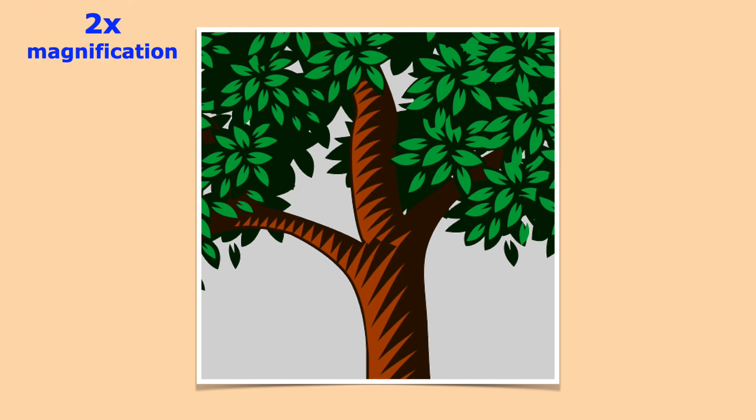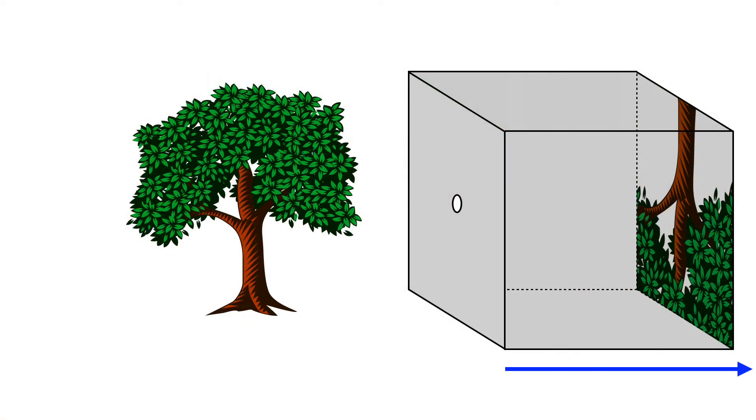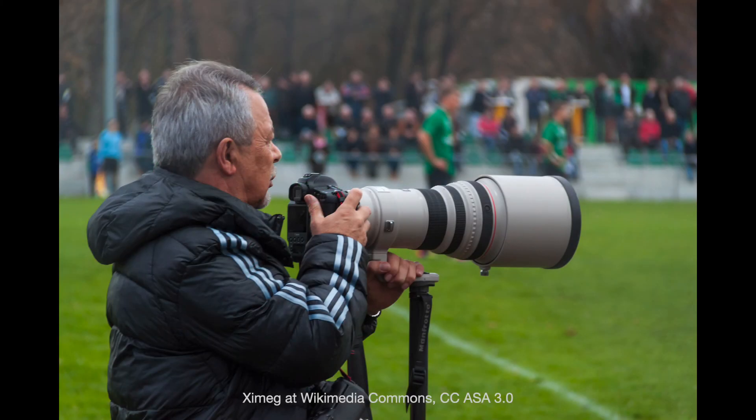Notice that when you double the magnification, it cuts the field of view in half. Now if you want more magnification, you have to make your camera even wider. This is why telephoto lenses are so big. You have to move the image plane far away from the optical center.